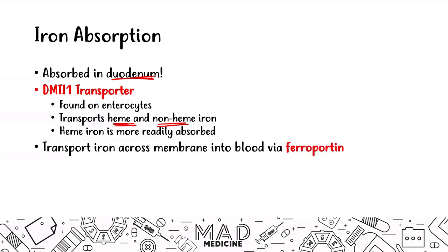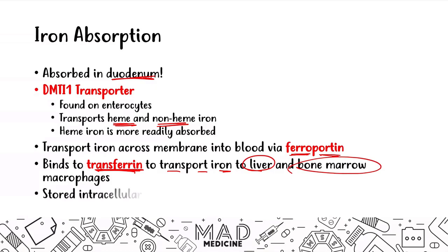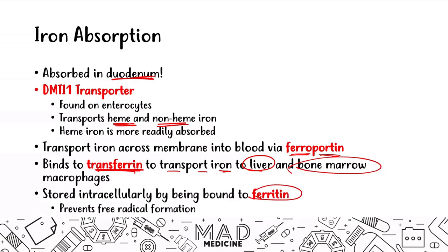When iron is transported into our bloodstream, we have a transport protein called ferroportin. Ferroportin binds to iron and helps it transport across the membranes into our blood. Once in our blood, it binds to a protein called transferrin, which transports the iron to the liver and bone marrow — the main places where it's stored — where it can be used to produce heme and then hemoglobin. Iron is bound to proteins at every step because iron has the capacity to generate free radicals, so binding it to proteins prevents free radical formation.